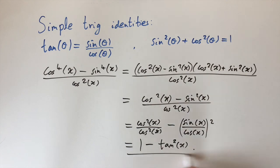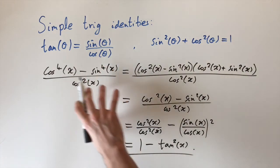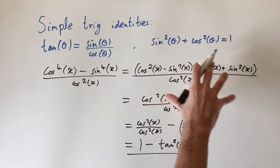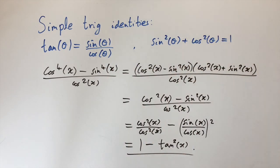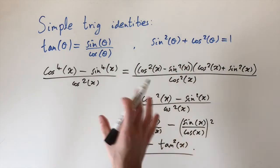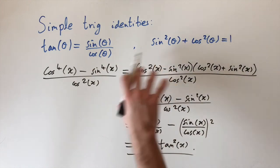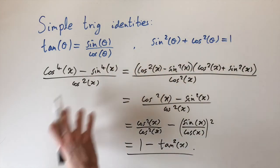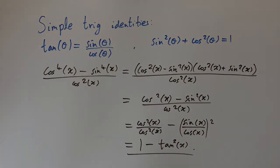We just showed that this really messy expression is actually just 1 − tan²x, which is really nice. I hope that gave you some intuition about why these identities are true and how to use them. There are so many different problems where they help simplify expressions, so these are two identities that are really good to know.